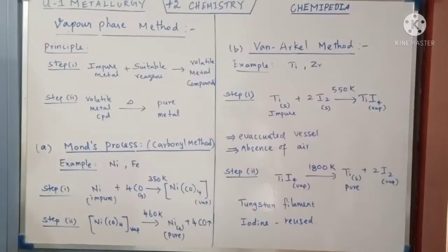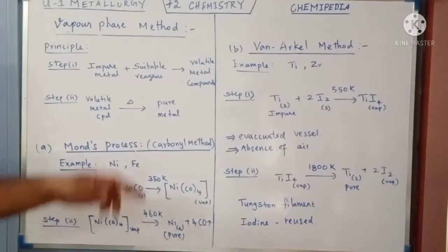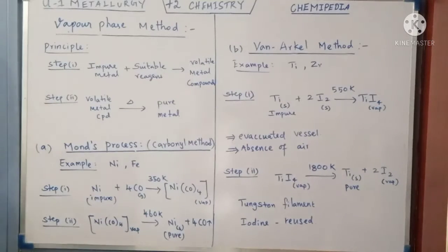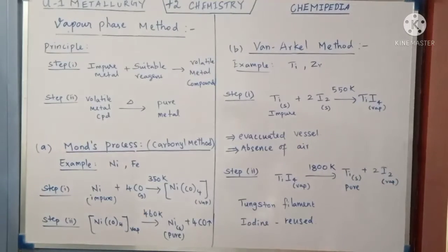Hi, welcome to Chemepedia, chemistry classes for 12th standard. Unit 1 metallurgy: in this session I am going to discuss about the various vapor phase methods which are used for refining an impure metal.